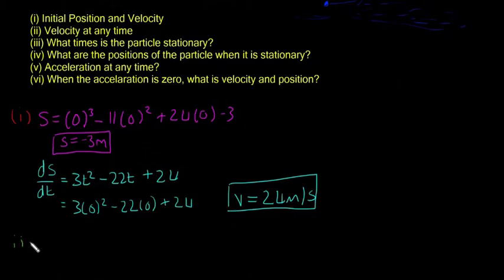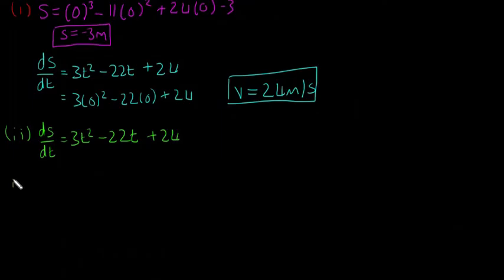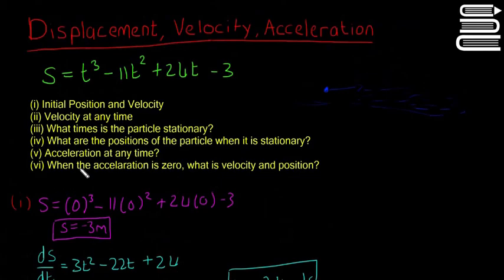Part two: the velocity at any time. So we've already kind of done that. That just means calculate what's a formula for the velocity. And the formula for the velocity, like we know, is ds/dt, which we calculated in the line above, which is just 3t squared minus 22t plus 24. I'll move on quickly to the next one. I'm trying to keep this video as short as possible.